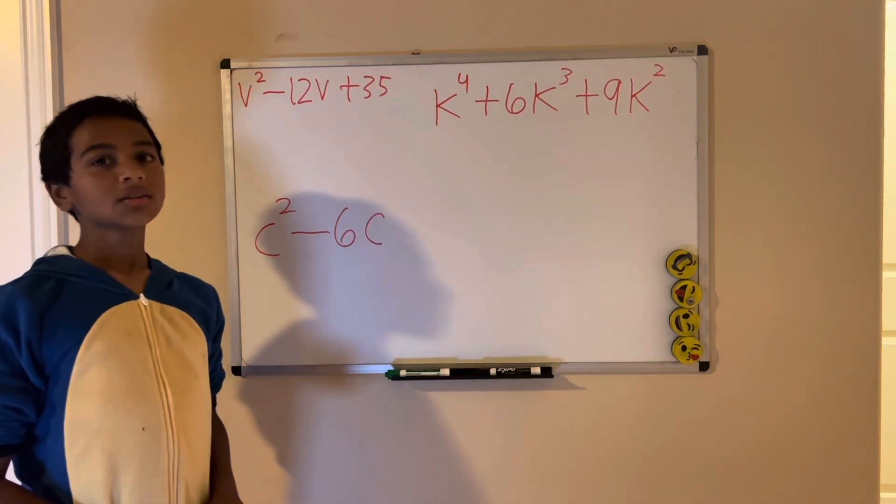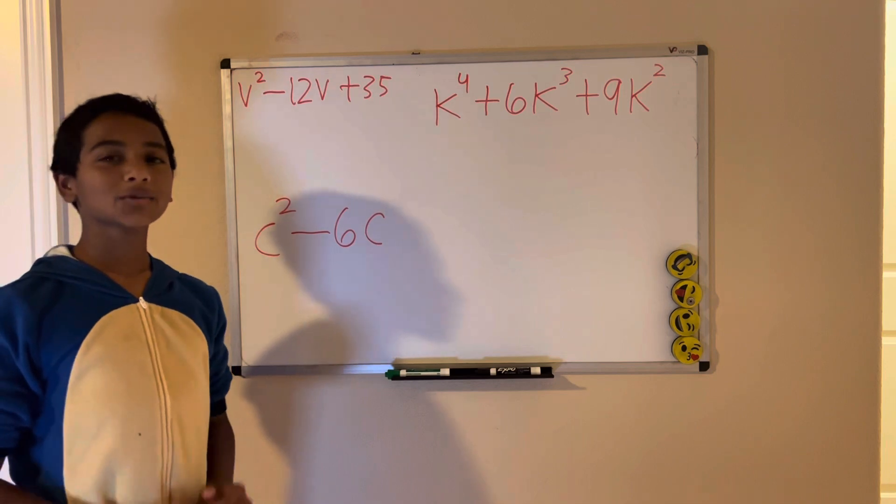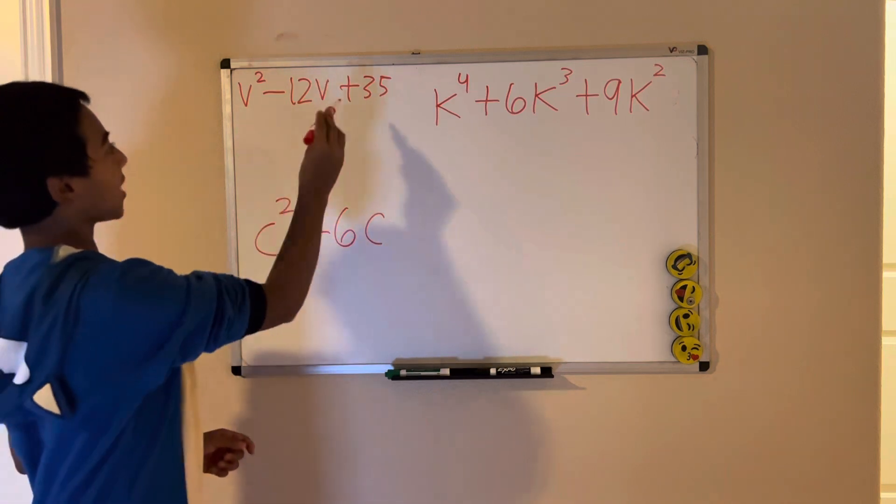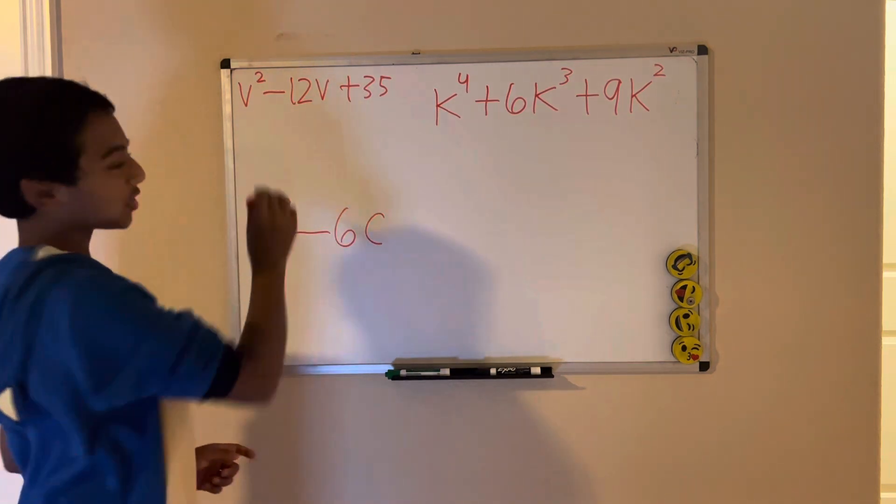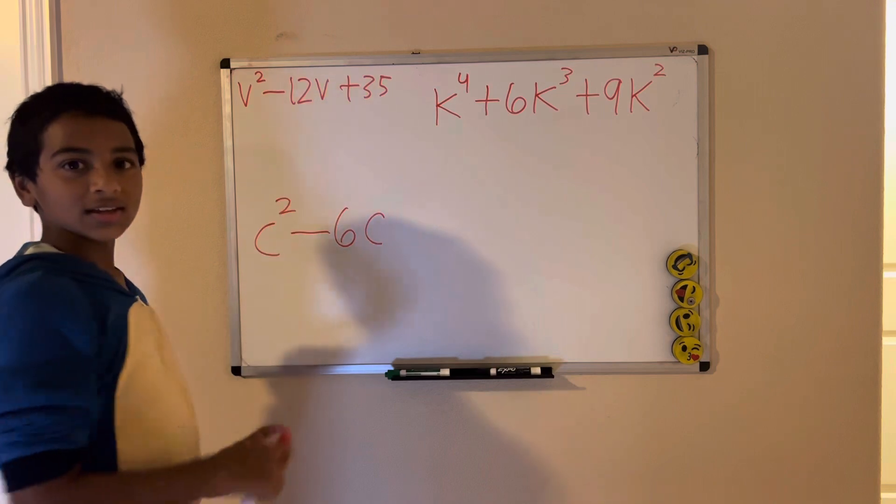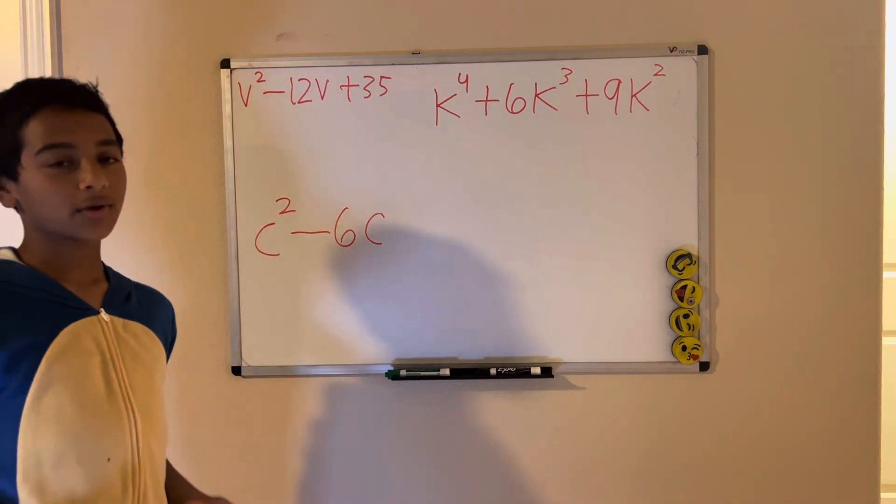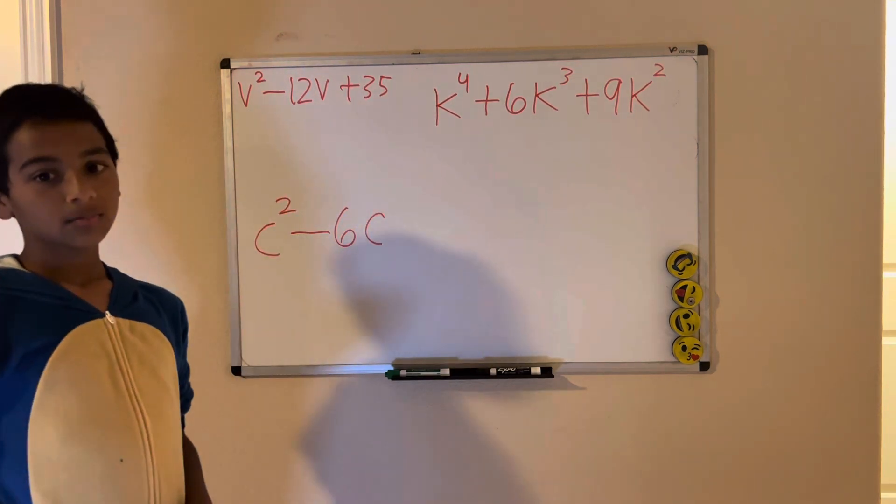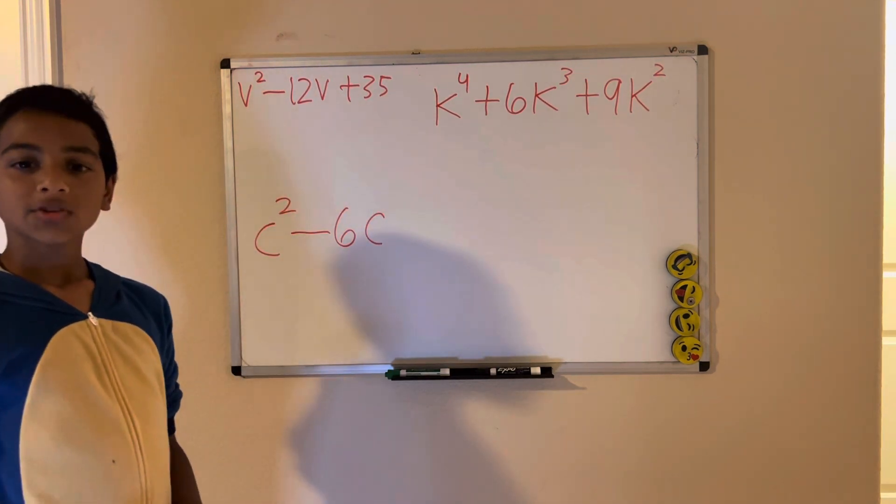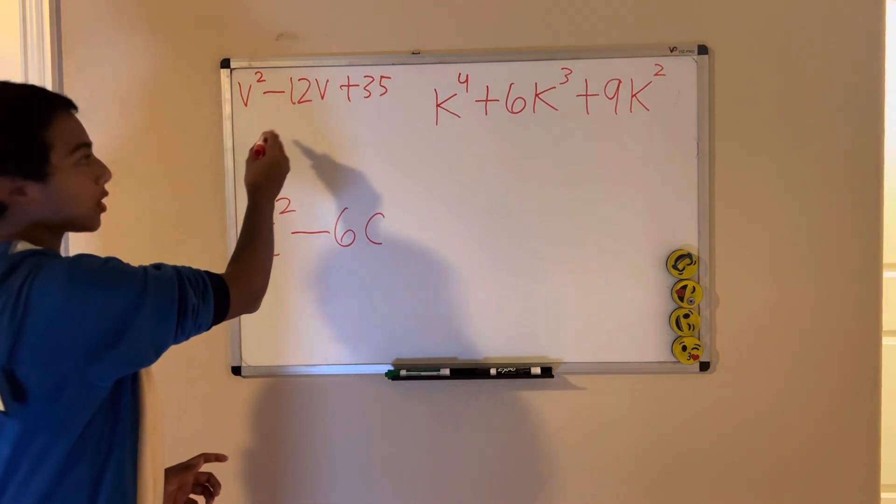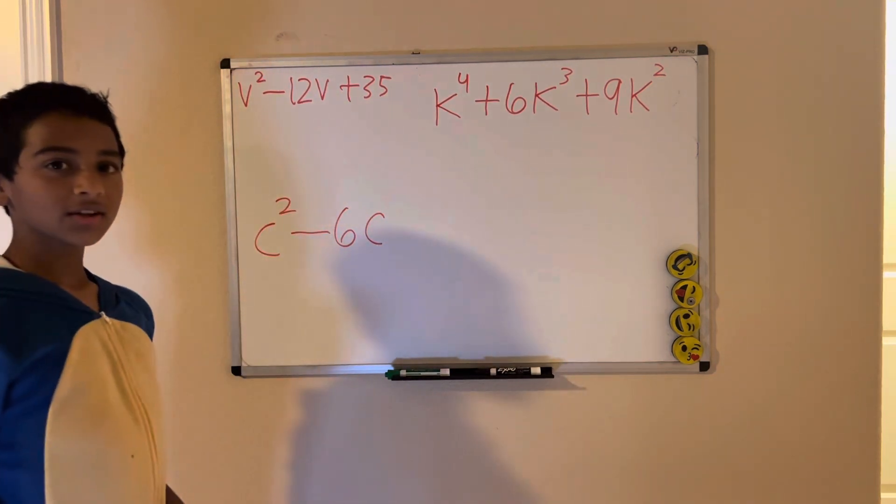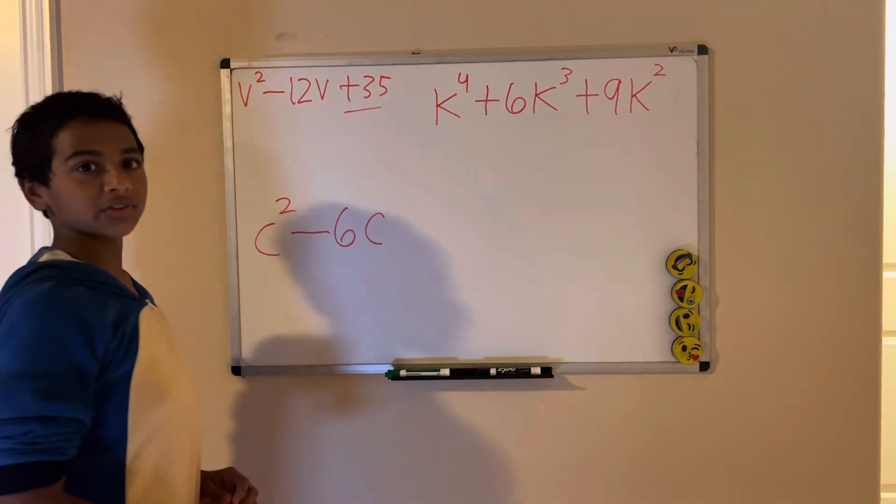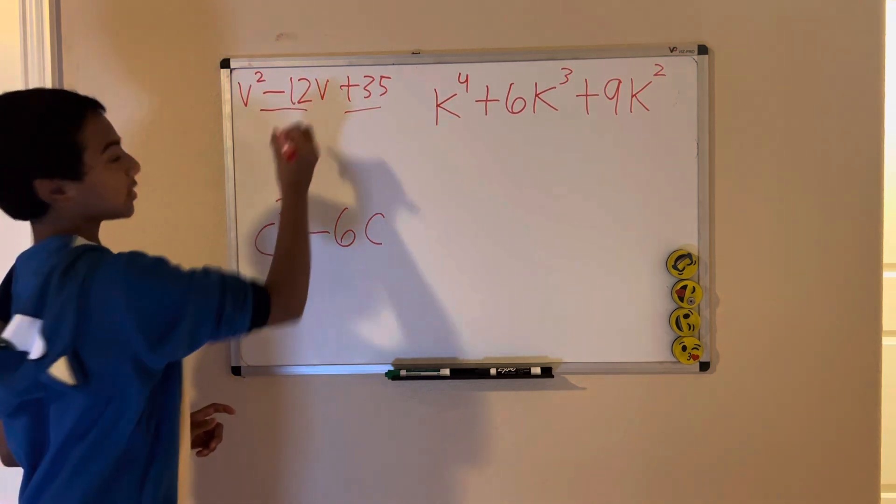Welcome back to my channel, my name is Shijan. Today I'm going to show you how to factor quadratics. This is a quadratic expression: v squared minus 12v plus 35. To factor this expression, we need to figure out what two numbers multiply up to 35 but add to negative 12.